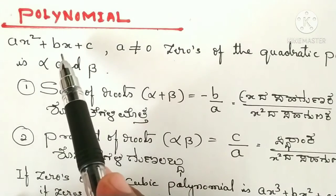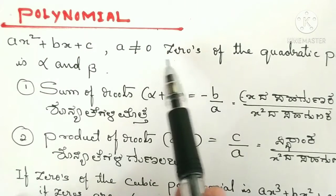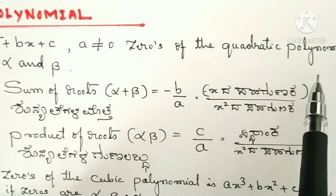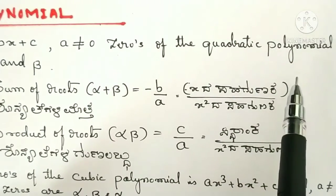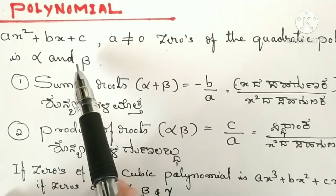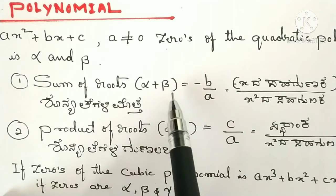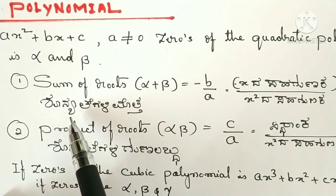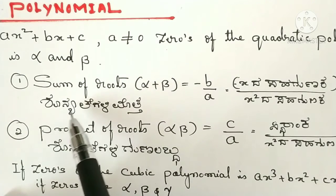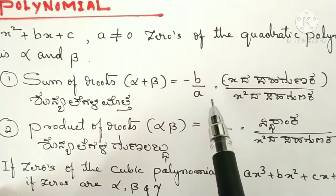For the quadratic polynomial ax squared plus bx plus c, where a is not equal to 0, with zeros alpha and beta: sum of roots alpha plus beta is equal to minus b by a.